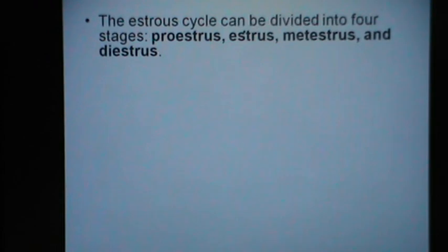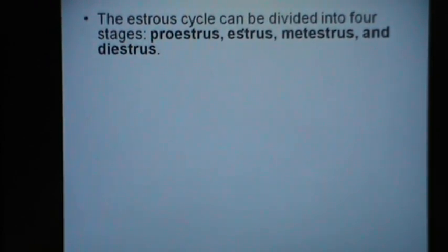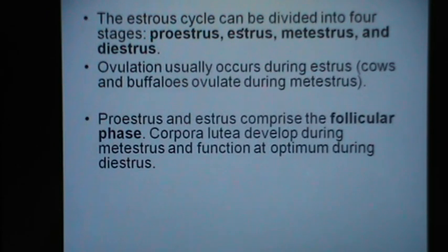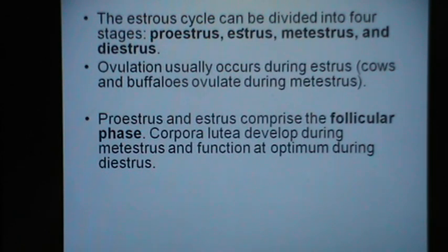The estrus cycle for our understanding has been divided into four stages: the proestrus, estrus, metestrus and diestrus. Ovulation usually occurs during estrus; cows and buffalo ovulate during the metestrus, while most other domestic farm animals — mares, ewes, goats — ovulate during the estrus. Proestrus and estrus together comprise the follicle phase, and the corpus luteum develops during metestrus and functions at optimum during the diestrus.